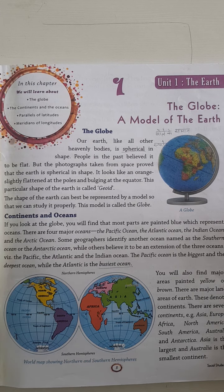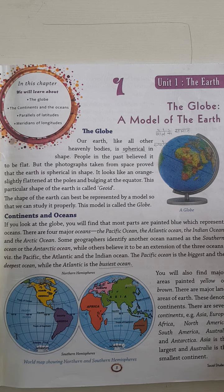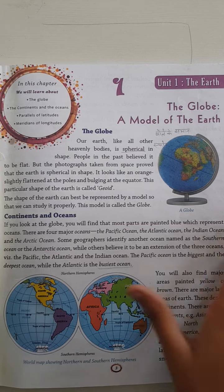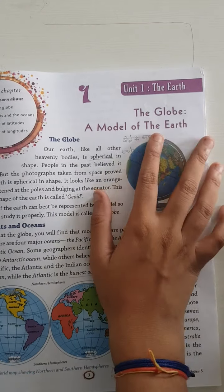This particular shape of the earth is called geoid. We represent it by a model so that we can study it properly. This model is called a globe. We can learn the shape of the earth through it. The model is called a globe, as you can see in the picture.